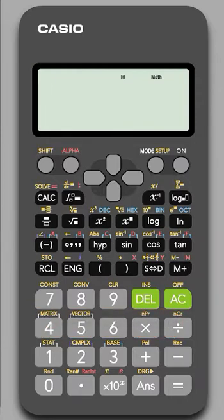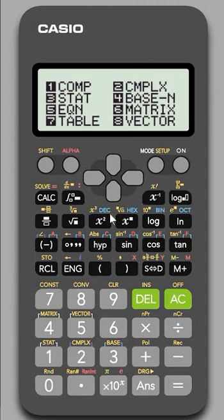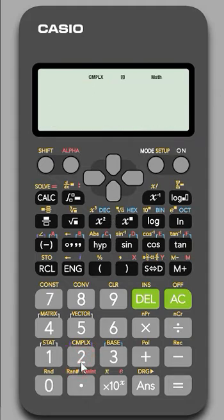So let us quickly go to complex mode. You hit mode and select two, and we are in complex mode now.